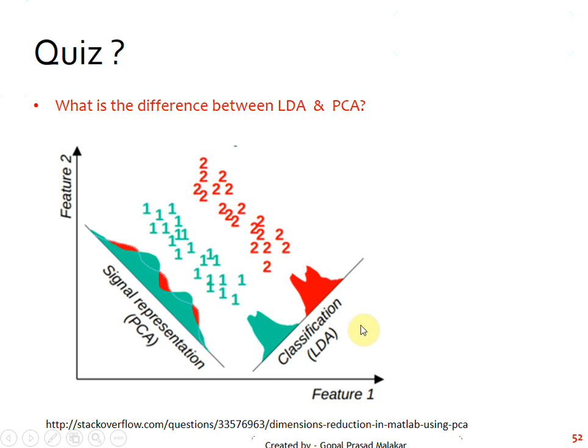Whereas LDA is bothered with the distribution for class 1 and distribution for class 2, and this can say that this is the direction of LDA. Why? Because here the overlap is minimum.